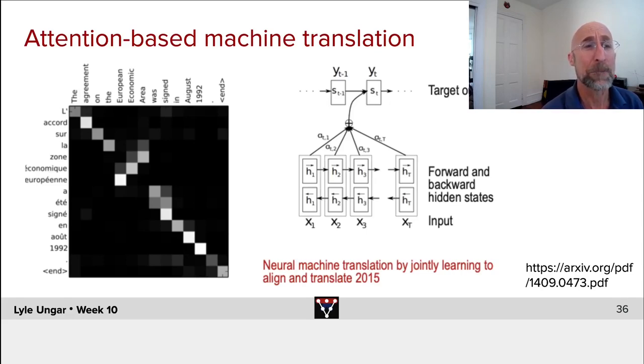If you think about translating l'accord, the two words becomes the agreement, sur becomes on, la becomes the. But now we have three things that don't quite match up. Zone économique européenne becomes European economic area. It's swapped. We're going right down one to one and then we've got three words that switched. Or sometimes there's two words. A été becomes was. Then other words like signé becomes signed and each one here does roughly one to one. So roughly things line up.